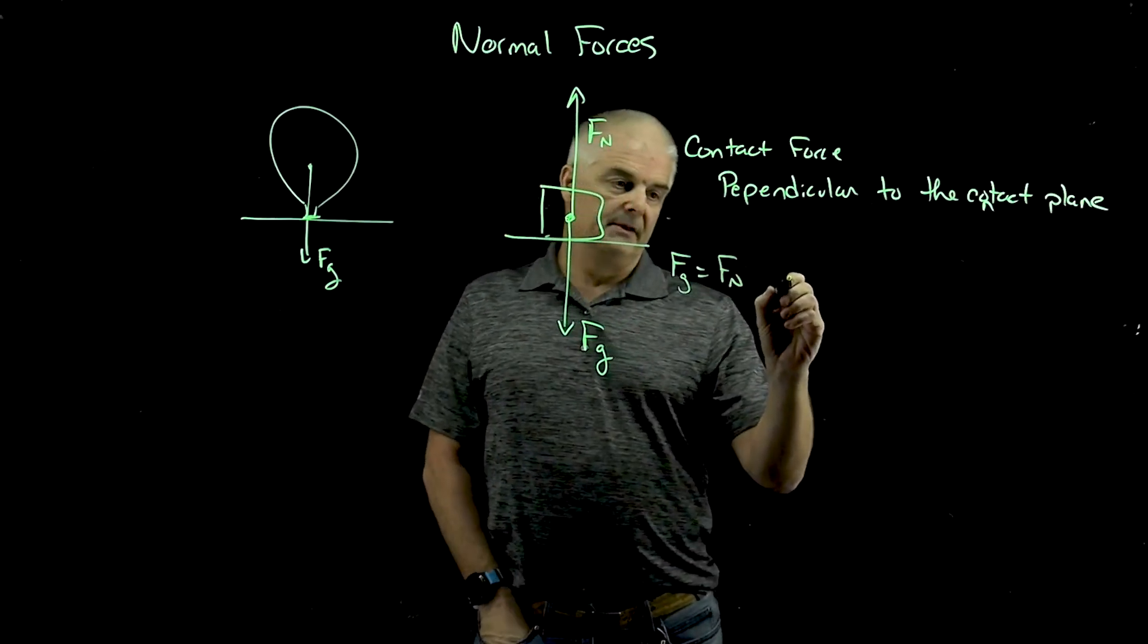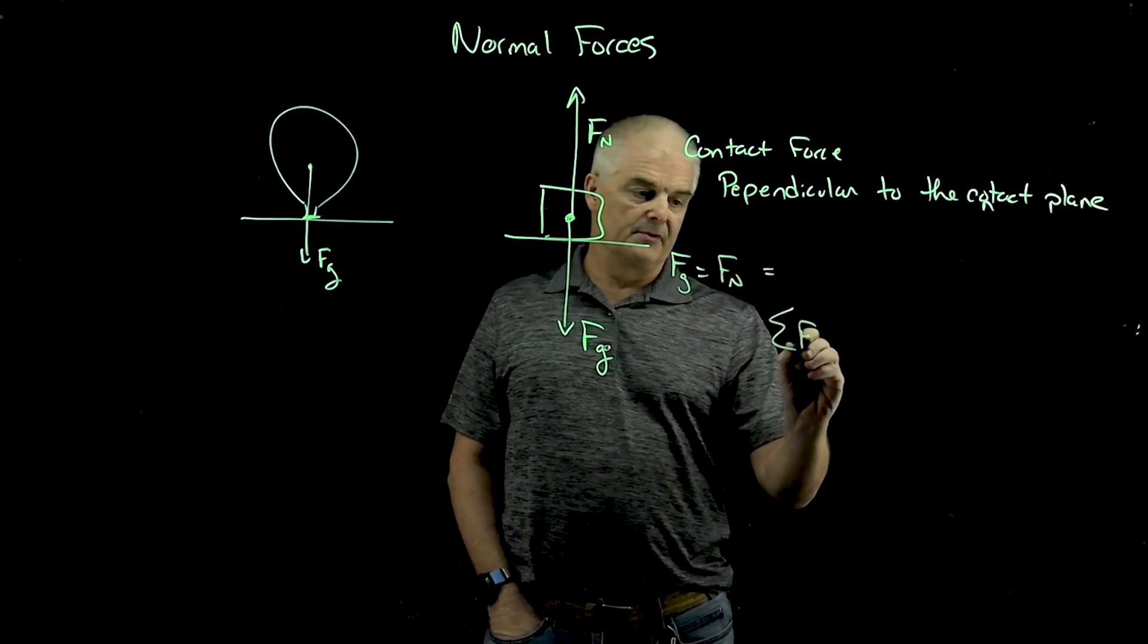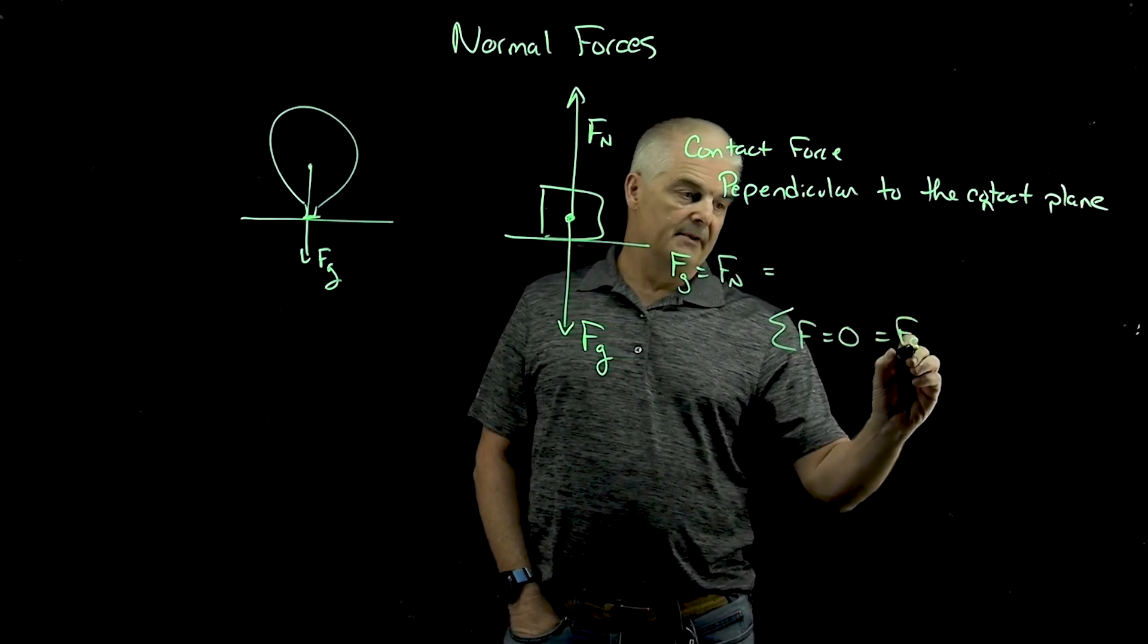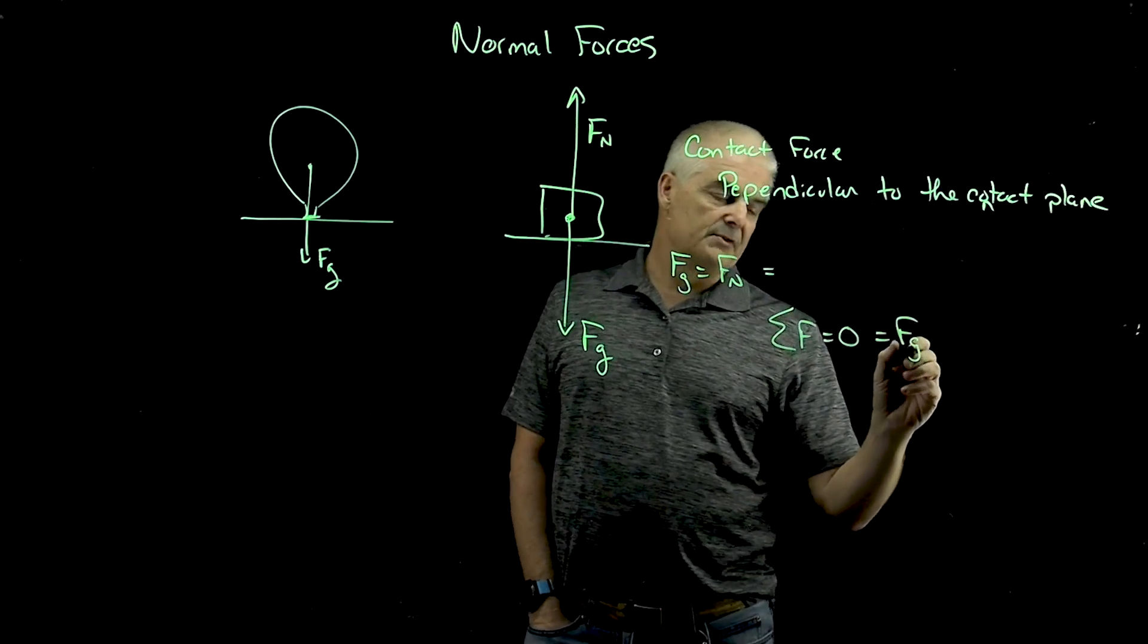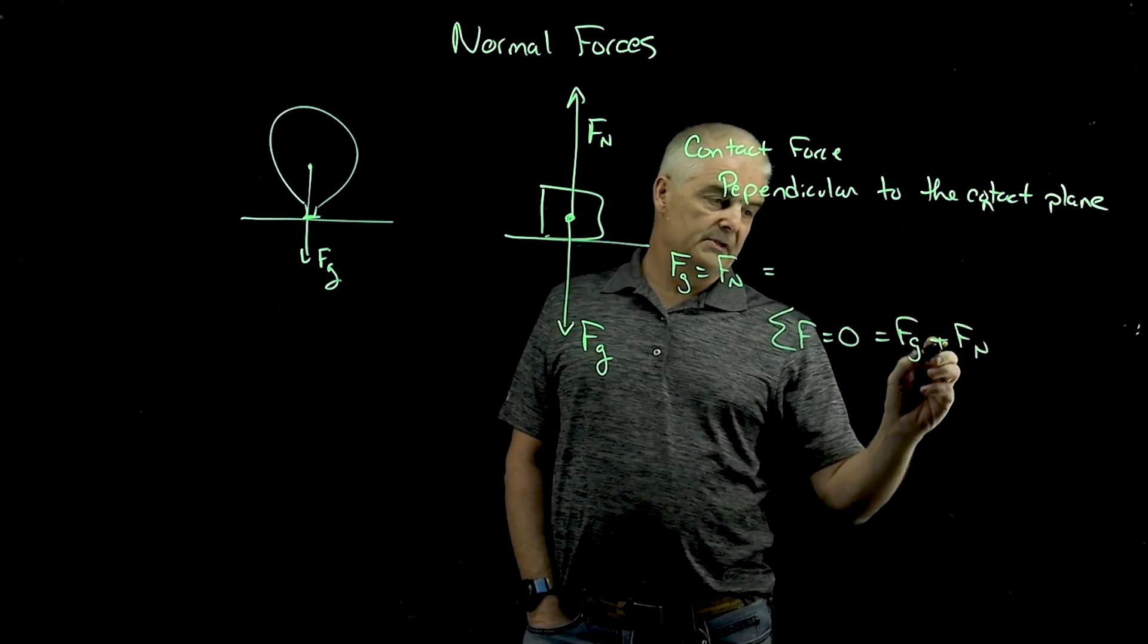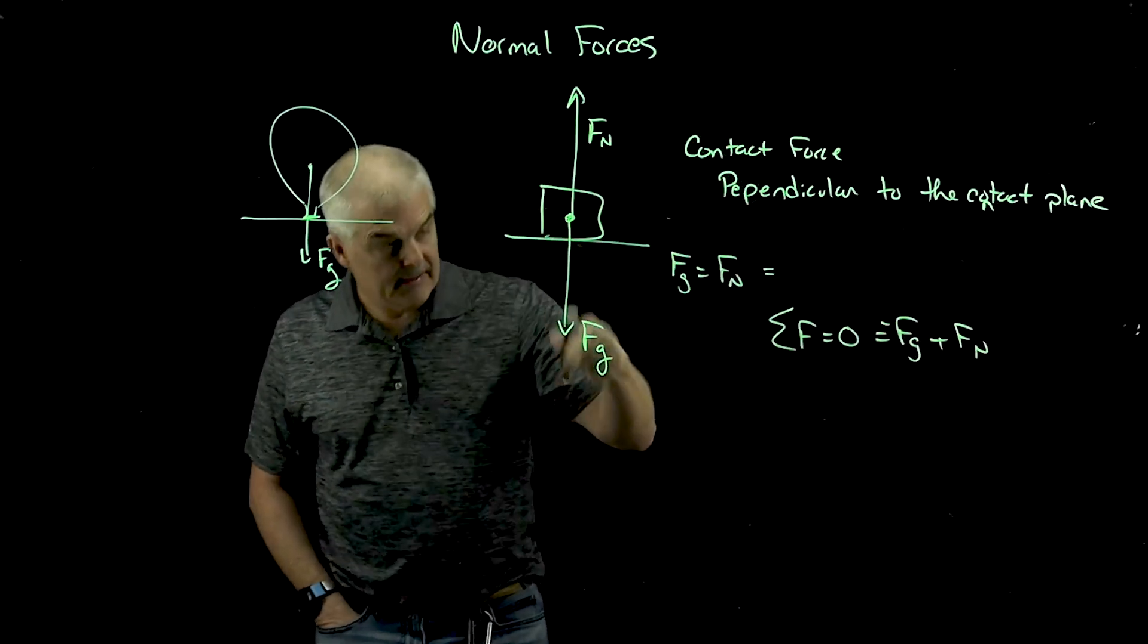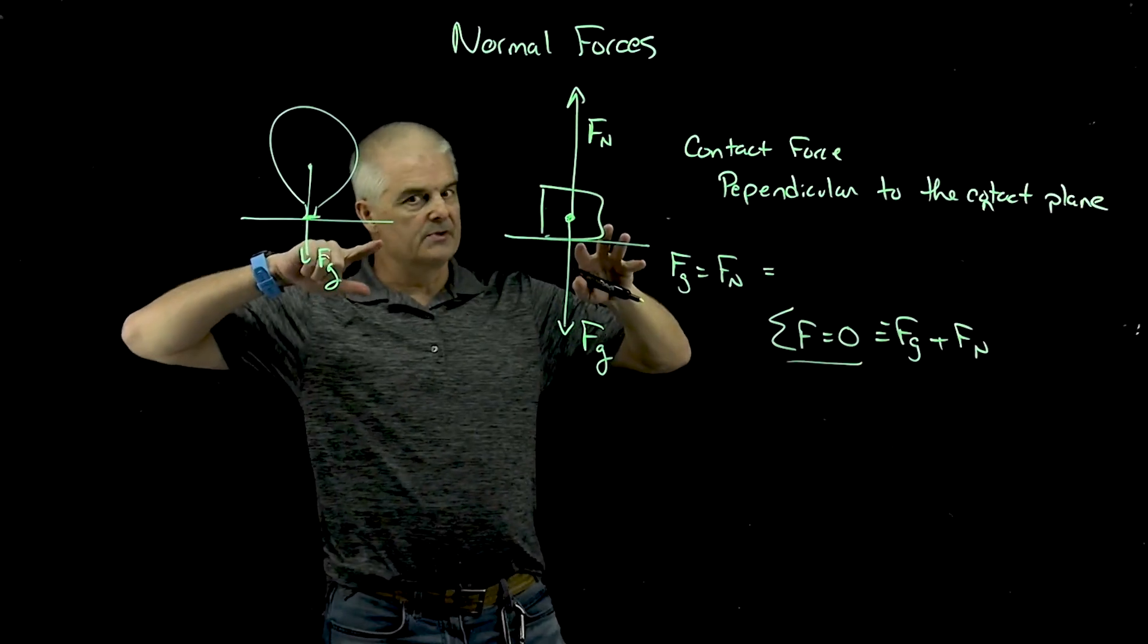Or to say this, these are equal because the sum of the forces equals zero. The force of gravity, it's actually not equal. They're equal and opposite. Because the force of gravity plus the normal force equals zero. The gravity force would be a negative number because it's going down, and the normal force would be positive, and they add up to zero. So that's what the normal force is.